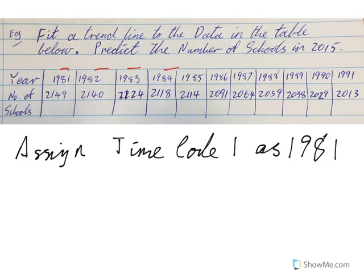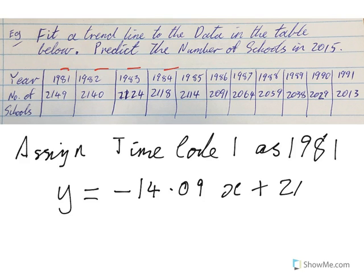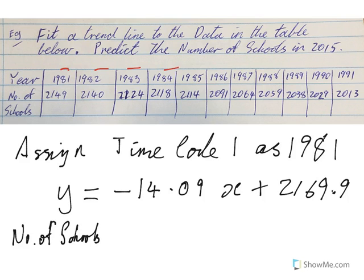That's what I've done in the video on how to use your calculator. The calculator gives the output in terms of y equals, and the info you'll have written down is the slope and the intercept. So what we might do is rewrite it in terms of what we've got: y is the number of schools, and our slope tells us how many schools per year. We can't have 0.09 of a school, so we round that off to negative 14 times the year.